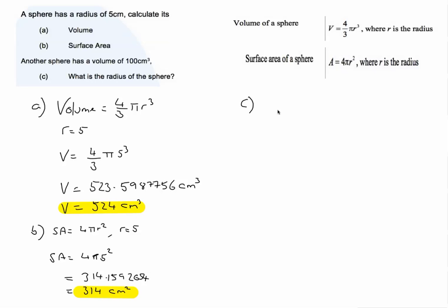So part C of the question is a little trickier because this time we have to work backwards. We know that the volume of the sphere is 100 centimeters cubed. And we need to work out what radius would have made that possible. So it's always a good idea to write down what we know.